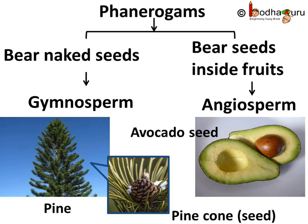But a mango tree has fruits and seeds are hidden inside the fruit, so it is an Angiosperm. Angio means covered, so angiosperms means covered seeds — they bear fruit to hide their seed inside it.